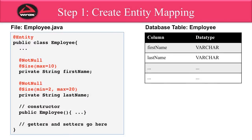Let's take a look at step one: creating the entity mapping. As I mentioned, you'll take your Java class and you'll map it to an actual database table. You'll accomplish this by making use of annotations. JPA provides special annotations for you to provide this mapping.